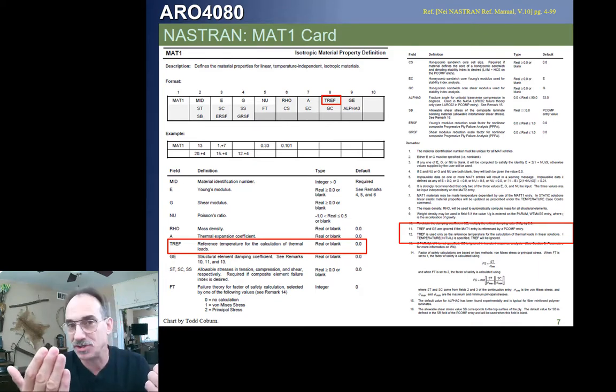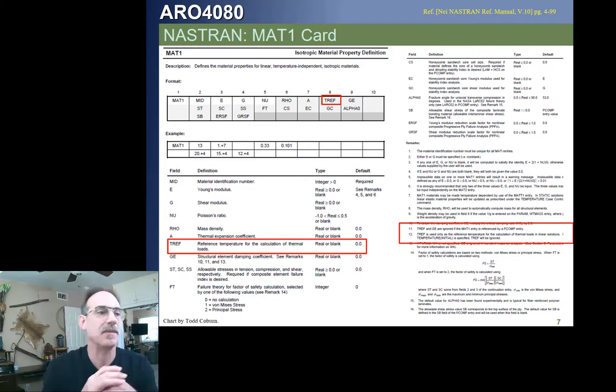So, we've got to be careful to identify what's the difference between a temperature change and just a temperature. Remember, temperature by itself doesn't cause structural effects. It's a change in temperature that causes that, unless you're talking about destroying the material or something. So, what this means is we could have identified a reference temperature on our material one card or any other material card, and then all other temperatures would be relative to that.